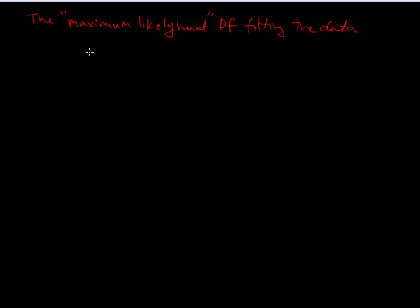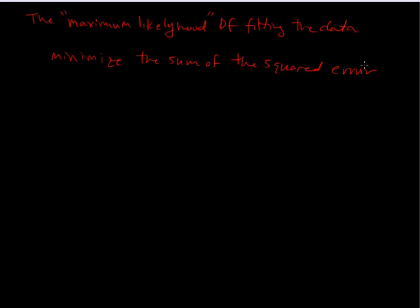The maximum likelihood of fitting the data is to minimize the sum of the squares — the squared error. What that looks like is basically we want to minimize the sum of EI squared. It turns out that we can find this minimum error by taking the derivative of this and setting it equal to zero.